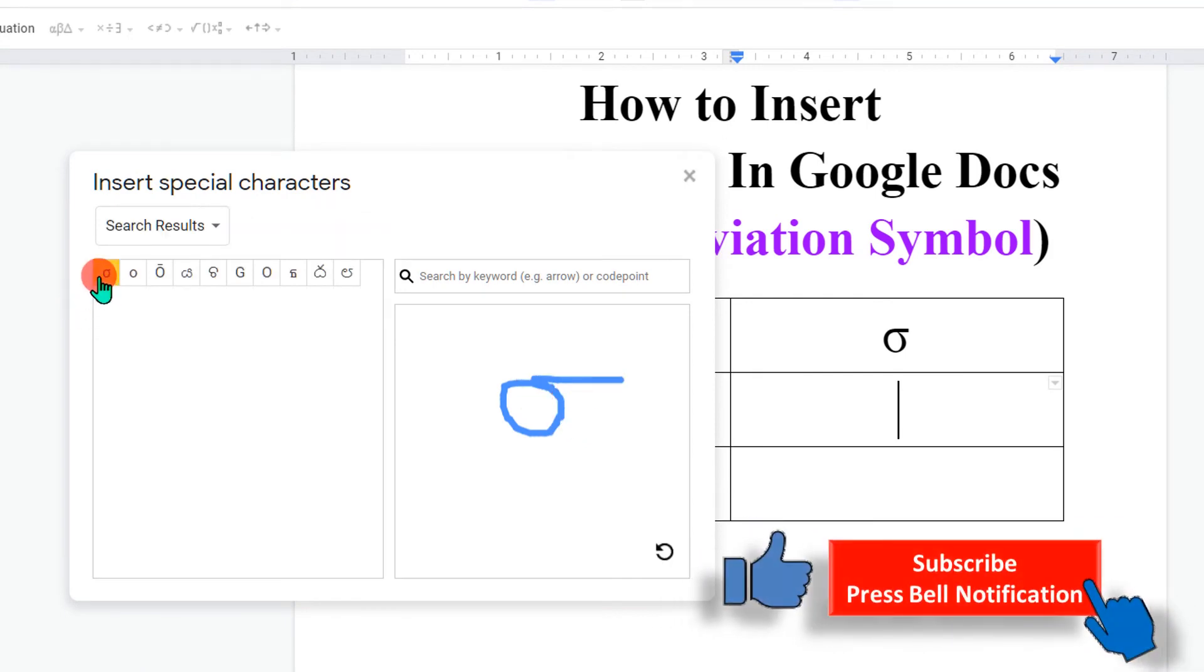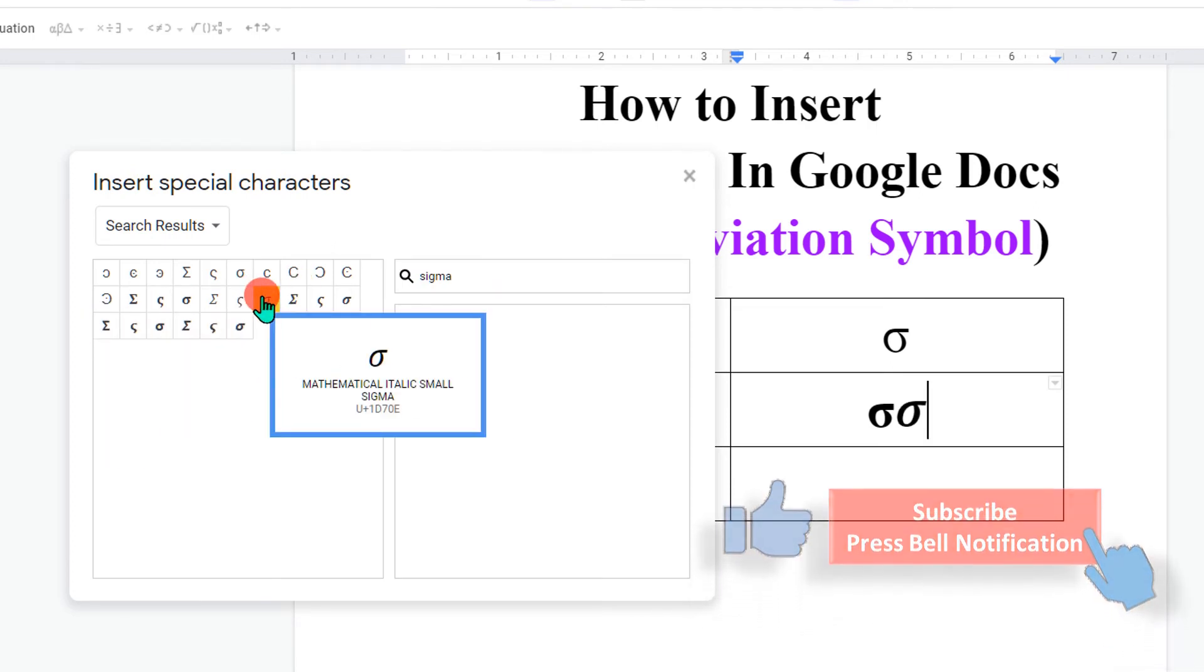or if you want to see more symbols you can type 'sigma' here and it will show variations of the sigma symbol. They are just slightly different. You can choose whatever you like.